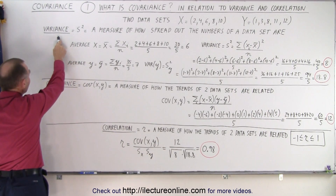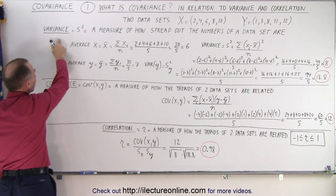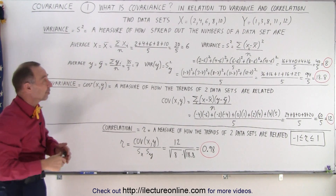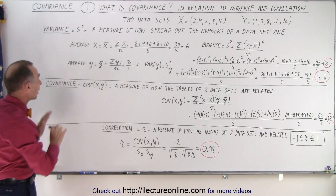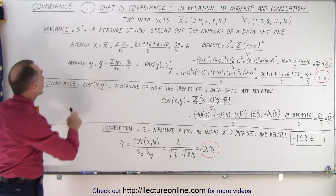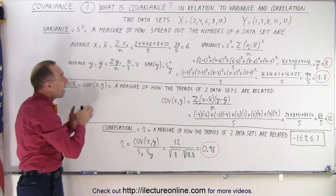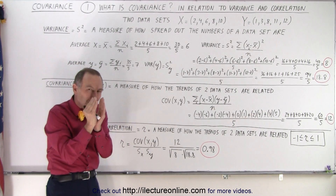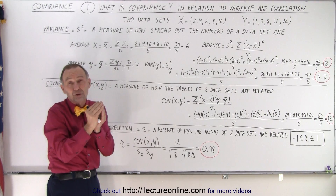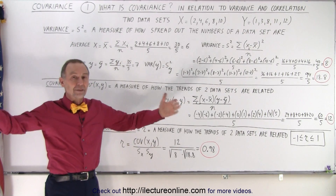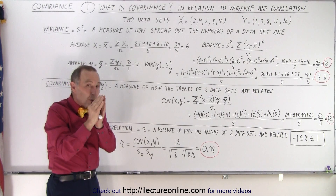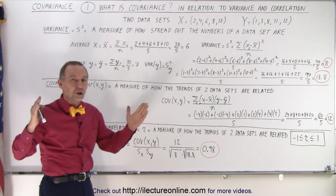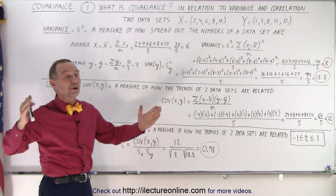What is the variance? We write the variance as S squared — sometimes we also use sigma squared, sigma of course being for the standard deviation. The variance S squared is simply a measure of how spread out the numbers of a data set are. Are they all bunched up together, very close to the mean? Or are they spread out a lot? So we can have a small variance or a large variance — are the numbers close together or far apart?